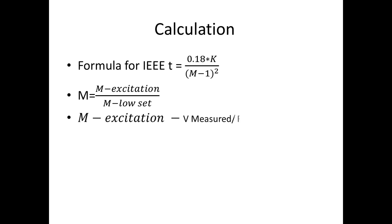M excitation is the V measured and frequency measured during over flux on the relay, and M low set is the low over flux settings on relay settings, that is V/f Hz at single, greater than or equal to 110%.